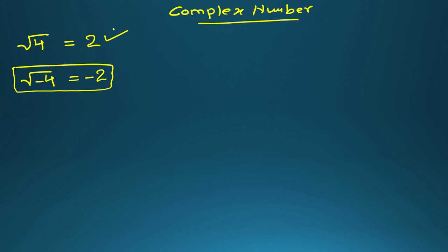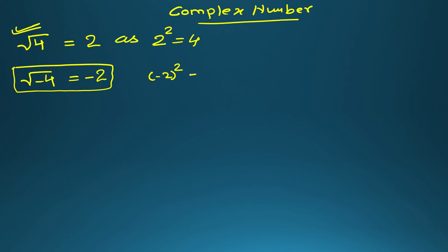Now, my question is: why is square root of 4 equal to 2? The simple reason is that the square of 2 is equal to 4, so square root of 4 is equal to 2. But if you say that square root of minus 4 is equal to minus 2, and you do the square of minus 2, will it be equal to minus 4? No, it will not. So square root of minus 4 will not be equal to minus 2.